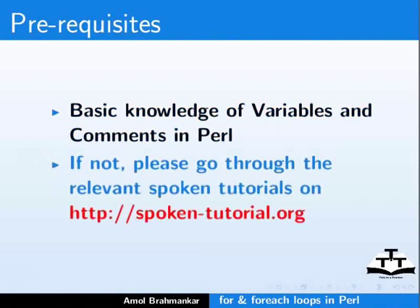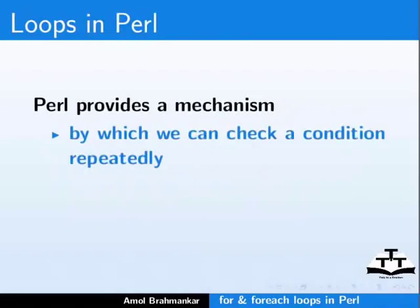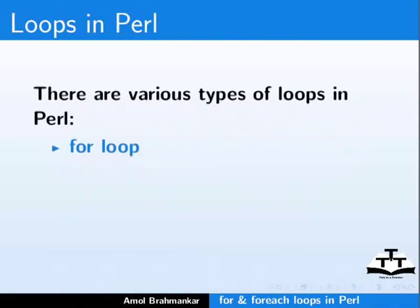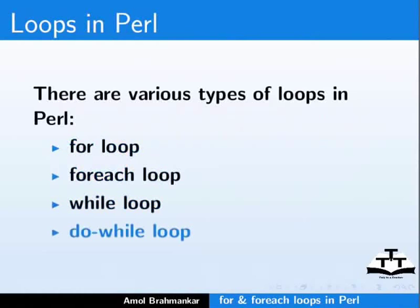You should have basic knowledge of variables and comments in Perl. If not, please go through the relevant spoken tutorials on the spoken tutorial website. Perl provides a mechanism by which we can check a condition repeatedly for various values. This is done using loops. There are various types of loops in Perl: for loop, foreach loop, while loop and do-while loop. In this tutorial we will cover for and foreach loop.